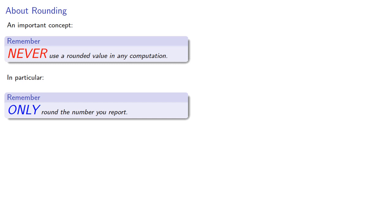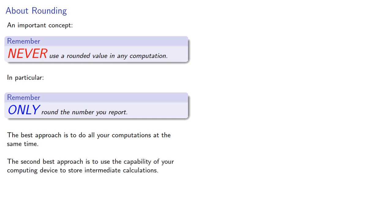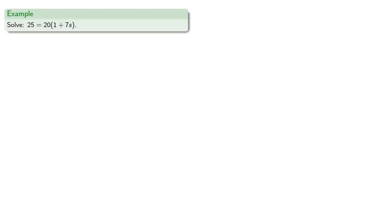The best approach is to do all your computations at the same time. If that's cumbersome, the second best approach is to use your computing device to store intermediate calculations. So if we wanted to solve 25 equals 20 times (1 plus 7s), we'd divide by 20, subtract 1, and divide the whole thing by 7 — recording all the steps but not actually computing until we evaluate that single expression at the end.